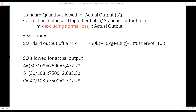These are the standard quantities allowed for actual output, which are needed to calculate material variances. We see the impact of normal loss in calculating standard quantity of output and standard quantity allowed for actual output. There is no impact of normal loss excluding this calculation.